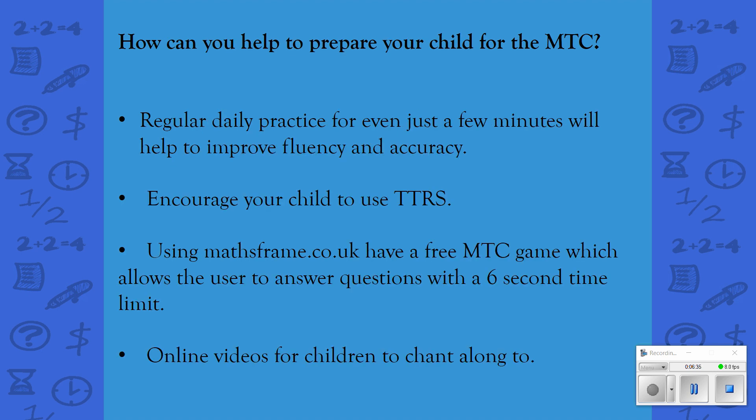How can you help further at home? Regular practice, even for just a few minutes, will help to improve your child's fluency and accuracy. In the car, walking to school, while you're eating dinner — any extra practice like that will be really beneficial to your child. If your child has access to a tablet or computer at home, encourage them to use their TTRS login. Staff can set specific tables that your child needs to work on, and the TTRS format really helps to improve that speed — it's that speed that's really important because of the six second time limit.